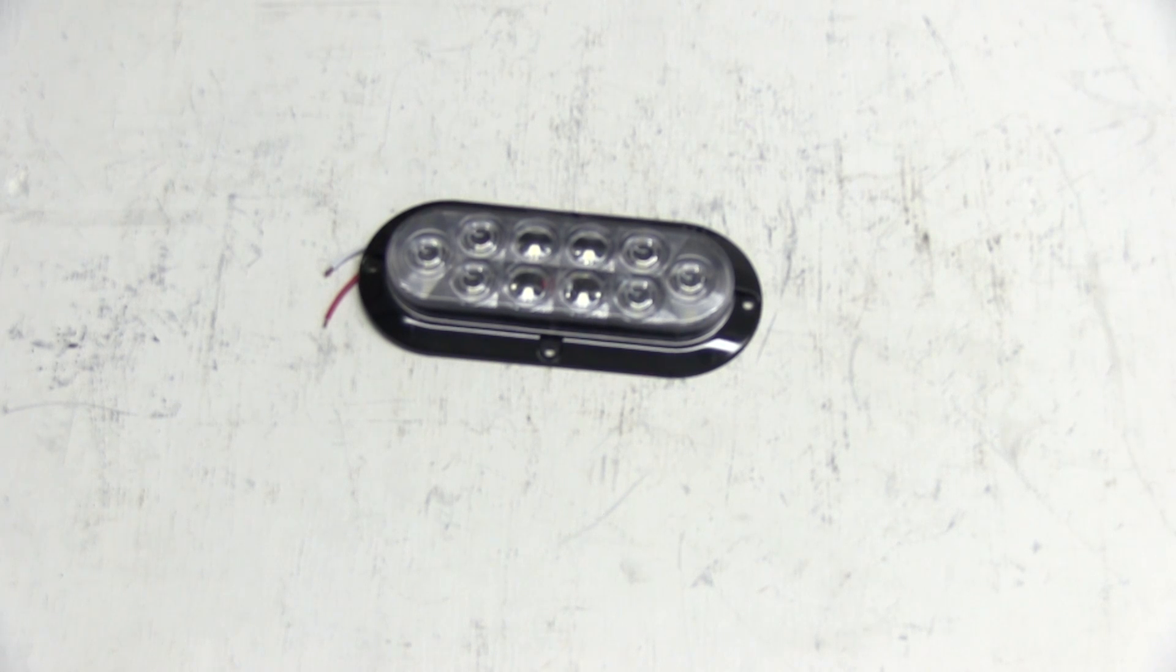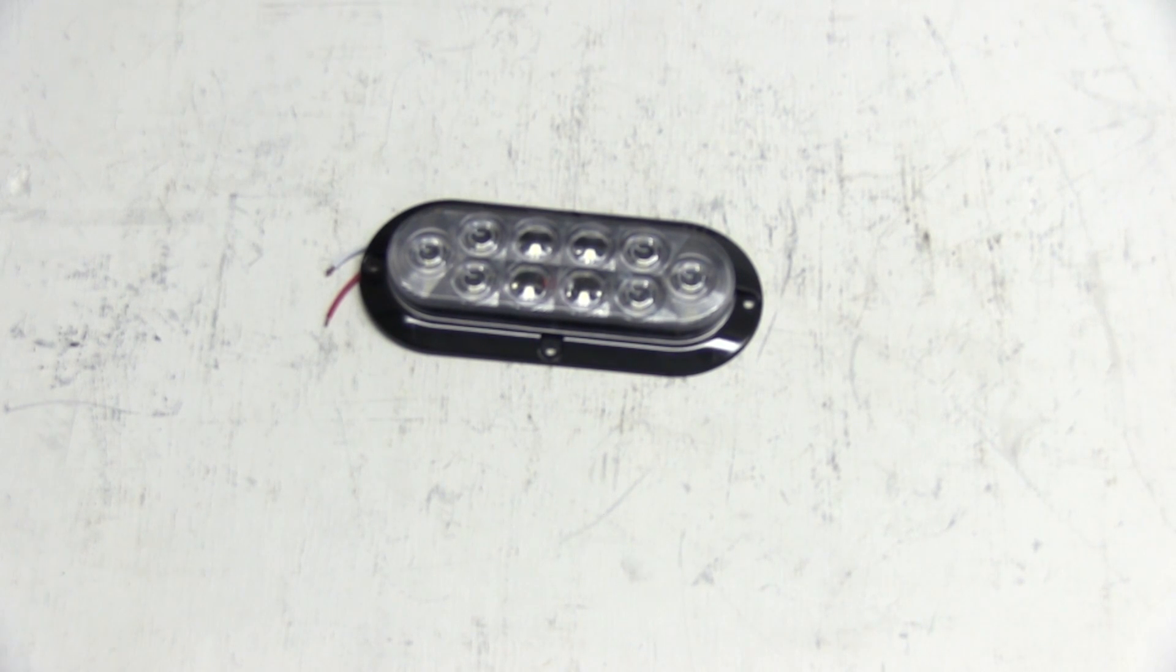Today we're going to take a look at Optronix's sealed 6.5 inch oval LED trailer utility light, part number BUL78CB.